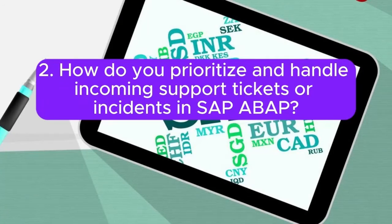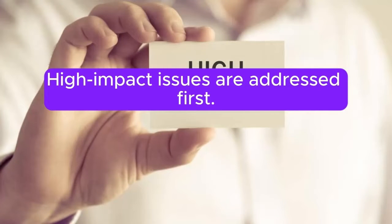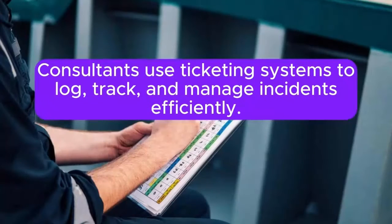Question 2: How do you prioritize and handle incoming support tickets or incidents in SAP ABAP? Answer: Prioritization involves assessing the impact on business processes. High-impact issues are addressed first. Consultants use ticketing systems to log, track, and manage incidents efficiently.